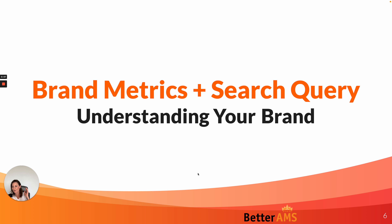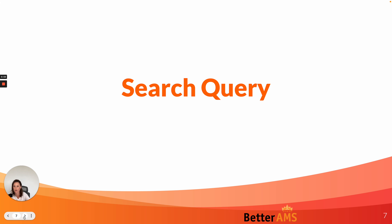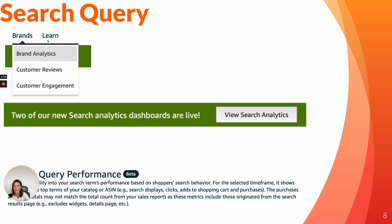So here's how I use both of these to understand all of the brands that we are looking at. Starting with search query — if you go under Brands within your Seller Central you'll see Brand Analytics, and then you will see two of our new search analytics dashboards are live. You will have to click on View Search Analytics. One thing that's super cool about this report is it's giving you the data on the search term level, which is something that we have hoped for forever.